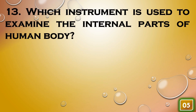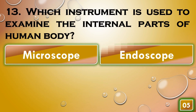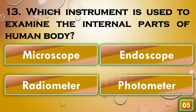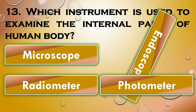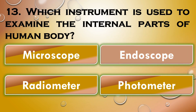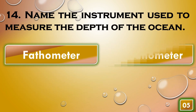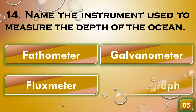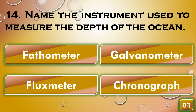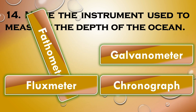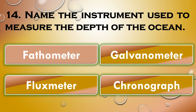Which instrument is used to examine the internal parts of the human body? Endoscope. Name the instrument used to measure the depth of the ocean. Fathometer.